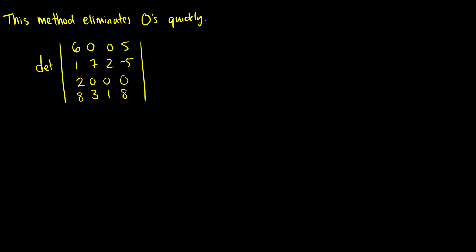Look at this matrix here: 6, 0, 0, 5. This is really good, it has two zeros in it. We have 1, 7, 2, negative 5, but here we have 2, 0, 0, 0. Let's do cofactor expansion across this third row here.